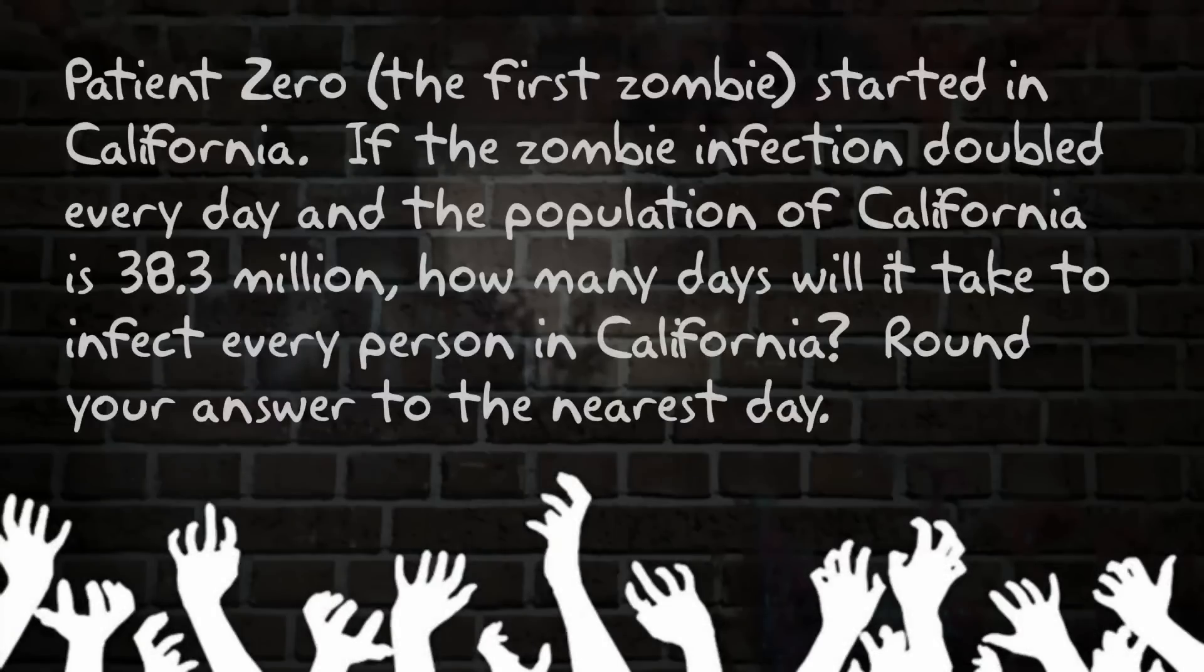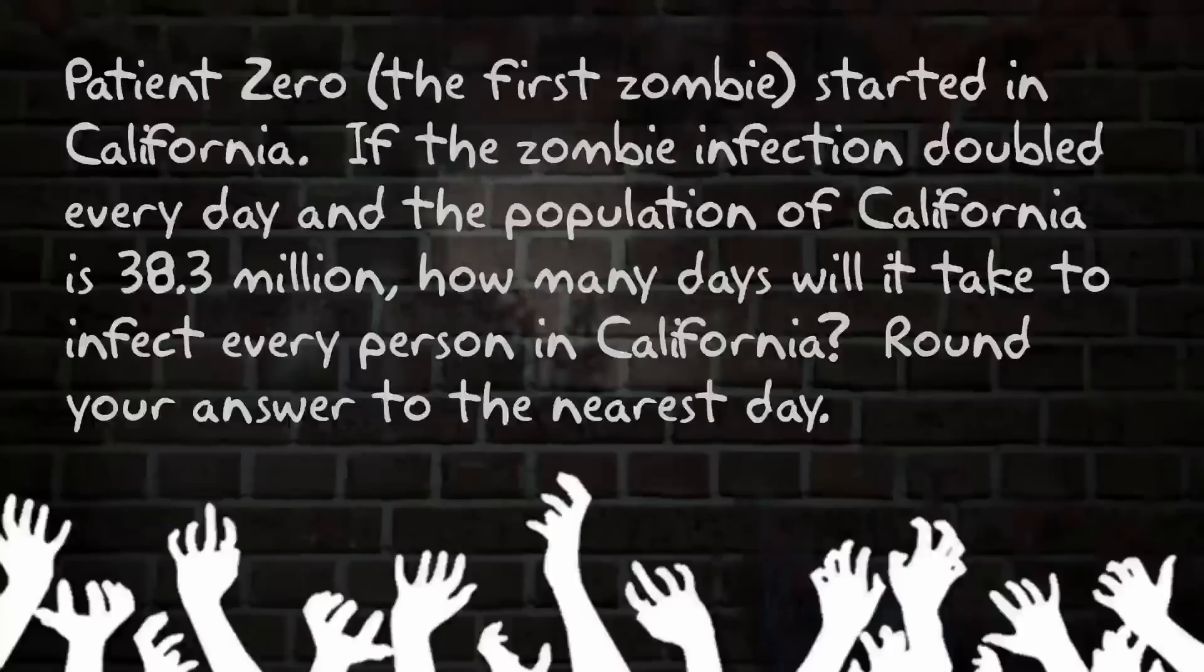Patient Zero, our first zombie, started in California. If the zombie infection doubled every day and the population of California is 38.3 million, how many days will it take to infect every person in California? Round your answer to the nearest day.